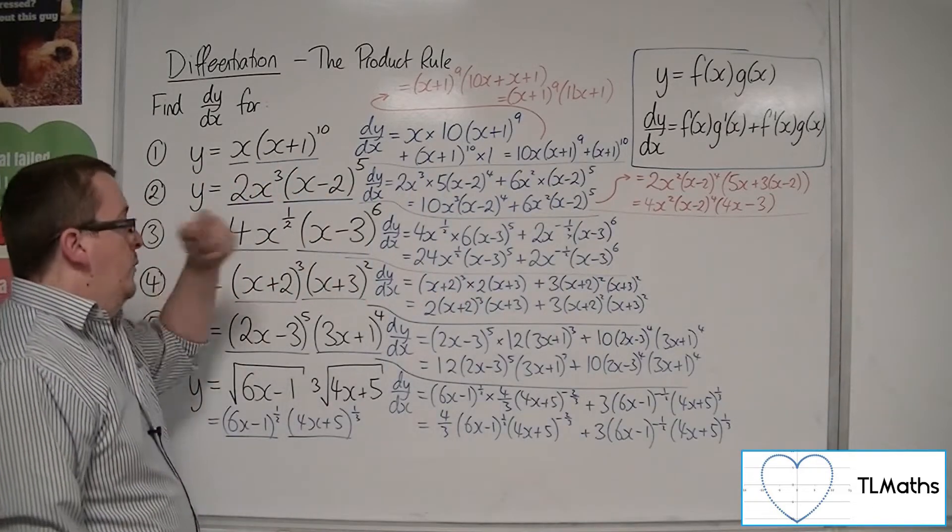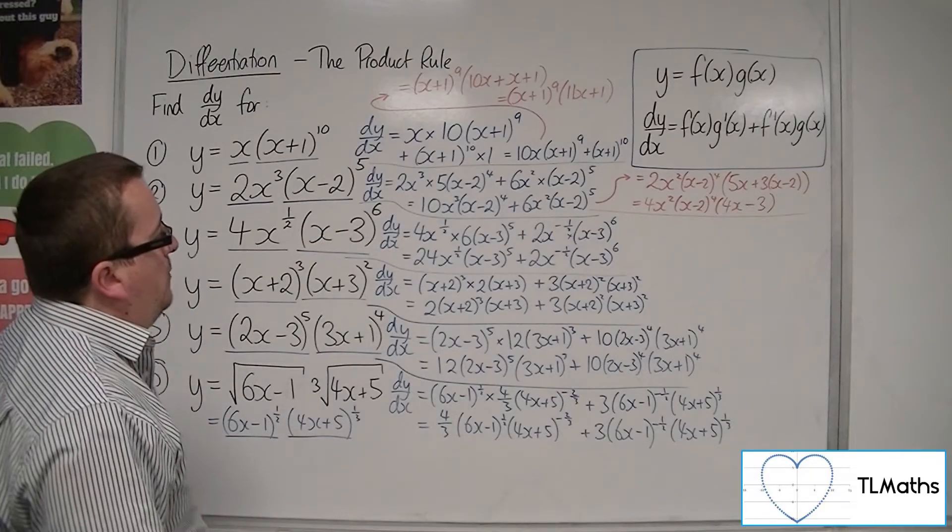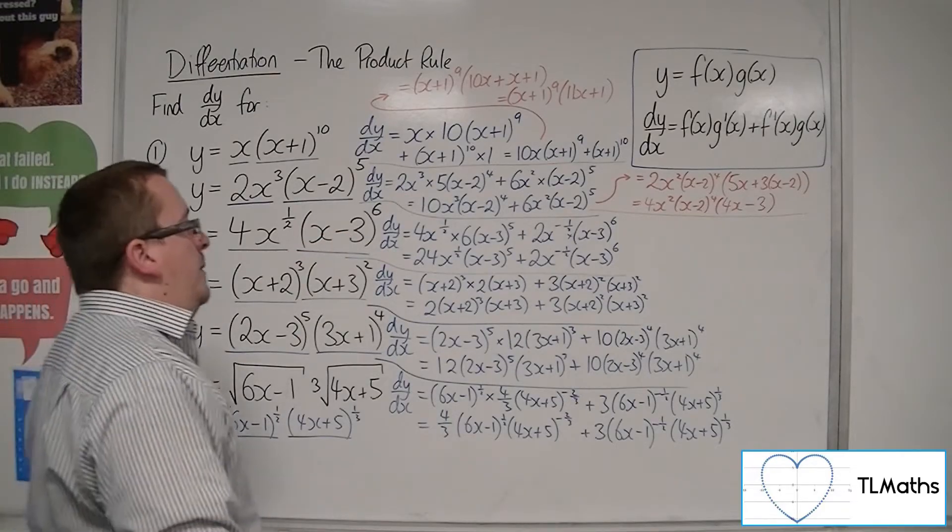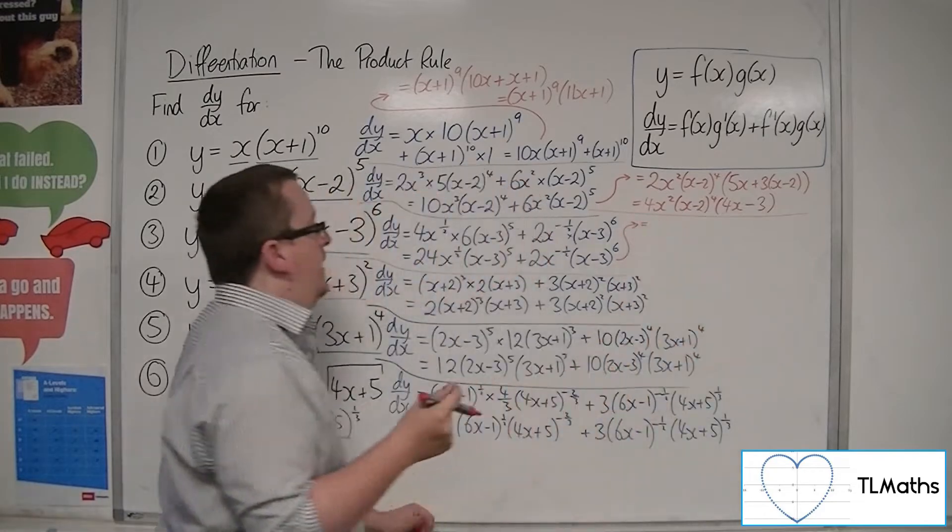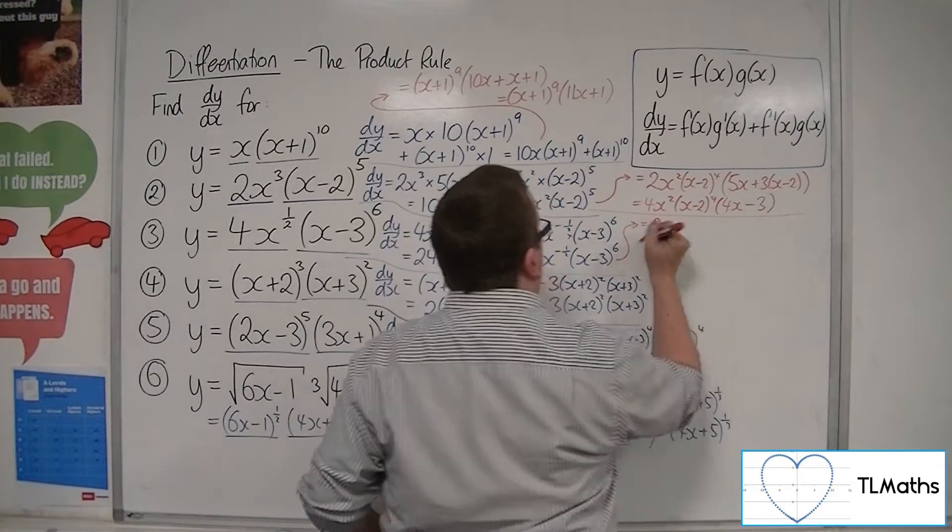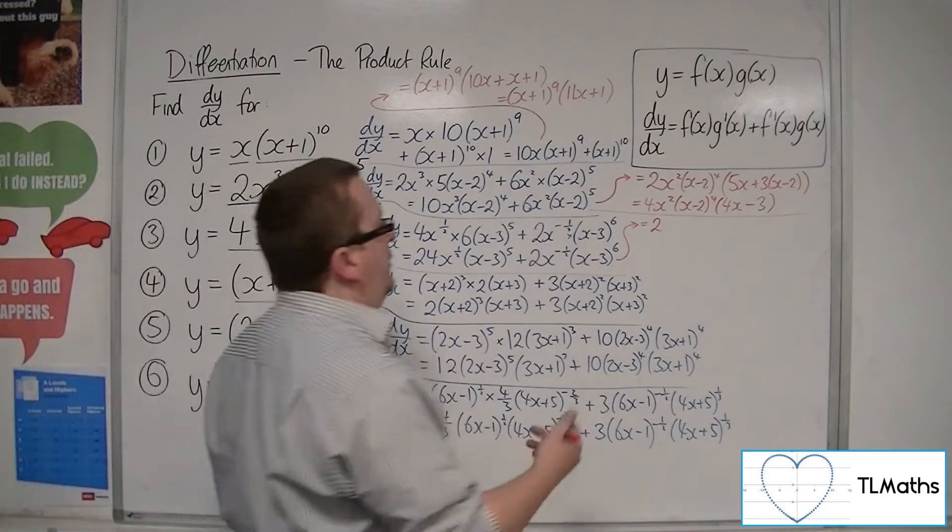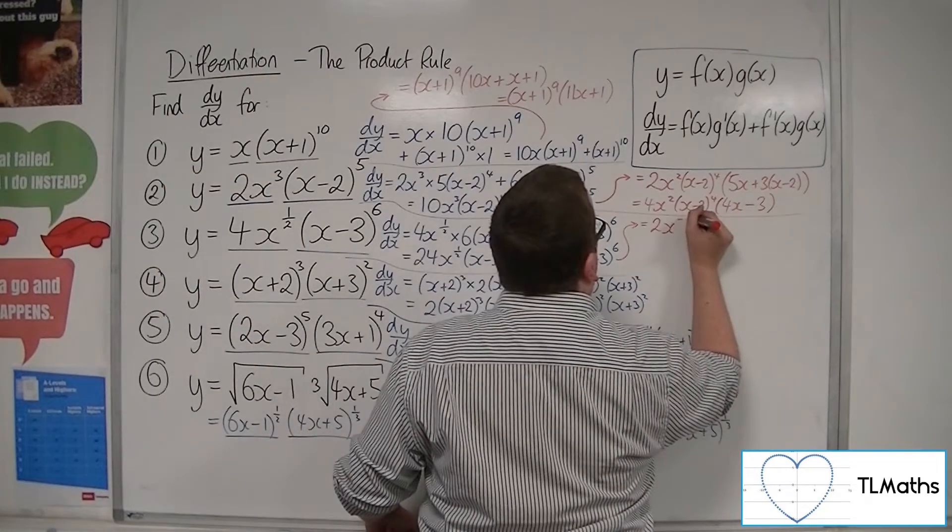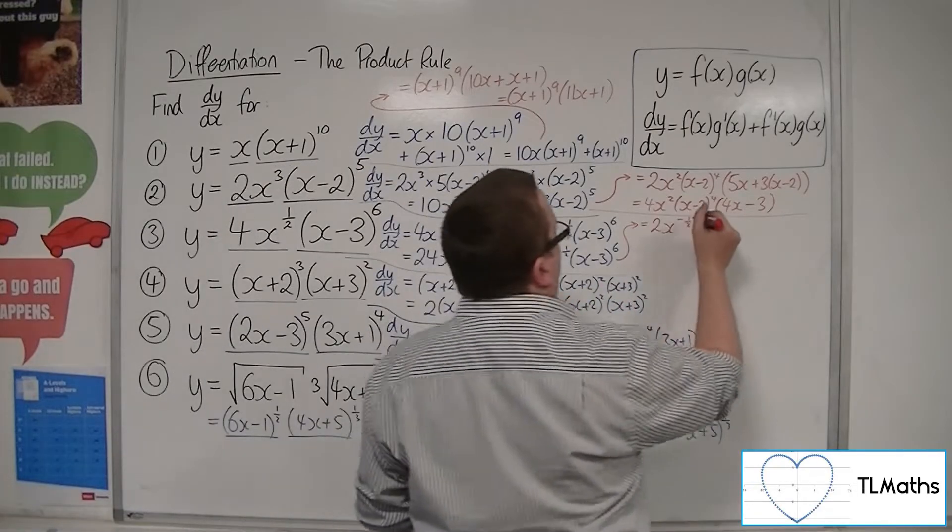So number 3. We've got this 24x^(1/2)(x-3)^5 plus 2x^(-1/2)(x-3)^6. So we can pull out a factor of 2 from the two coefficients. Now, we've got the x^(1/2) and x^(-1/2), so we're going to pull out the x^(-1/2). So that's got the lower index, and then we've got the (x-3)^5.